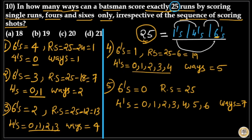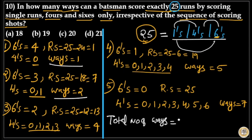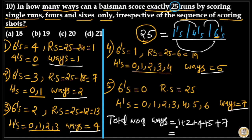The total number of ways is equal to 1 plus 2 plus 4 plus 5 plus 7. That is: 1 plus 2 equals 3, plus 4 equals 7, plus 5 equals 12, plus 7 equals 19. So the total number of ways is equal to 19. Option B is your answer.